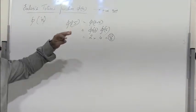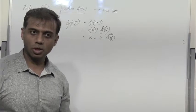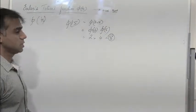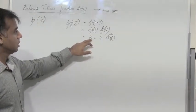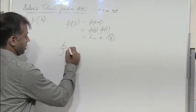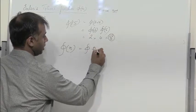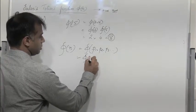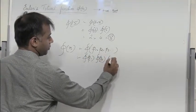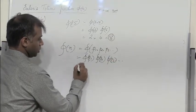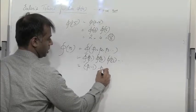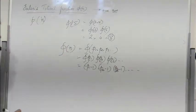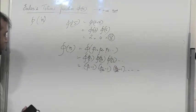To find Euler's Totient function for numbers which are not prime, write the given number as a product of distinct prime numbers. Then phi of n equals phi of p1 times phi of p2 times phi of p3 and so on, which equals (p1 minus 1)(p2 minus 1)(p3 minus 1) and so on. So for 15, it is 2 times 4 equals 8, confirming phi of 15 is 8.